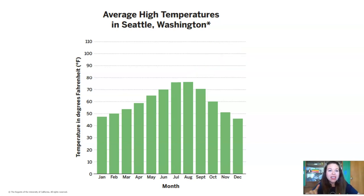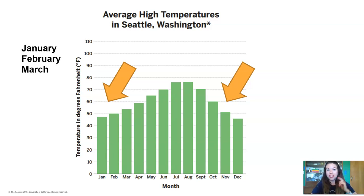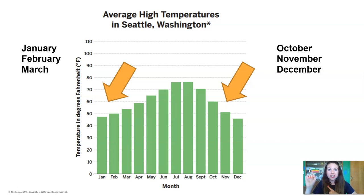Can you find the cold season in Seattle? There are two spots on the graph that show the cold season: at the beginning of the year in January and February, and then at the end of the year in November and December. So January, February, March, October, November, December are the months of the cold season.